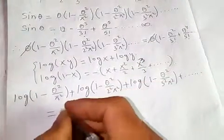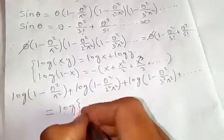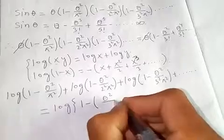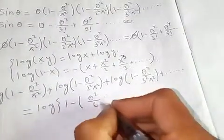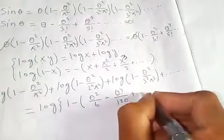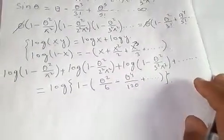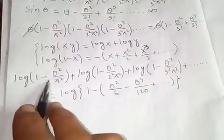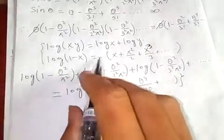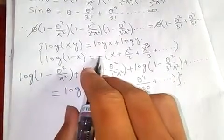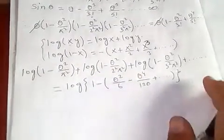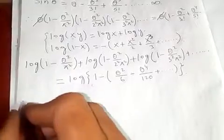On the right side we have log of 1 minus θ squared over 6, minus θ to the 4 over 120, plus and so on. Now applying the formula log(1 minus x) ≈ minus x minus x²/2 minus ... to both sides, and noting the minus signs cancel.